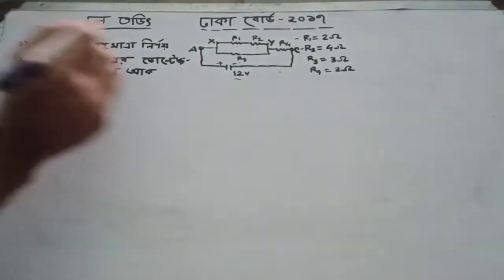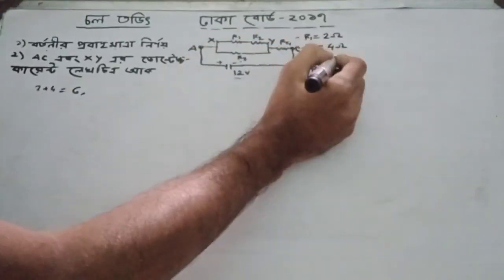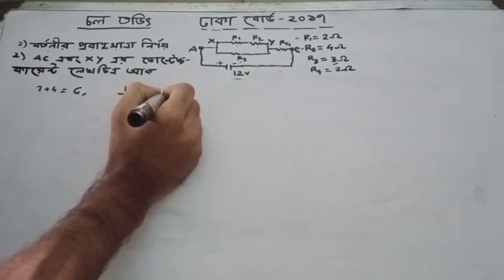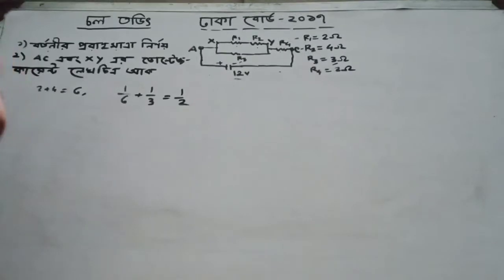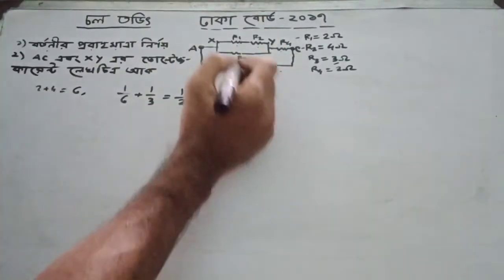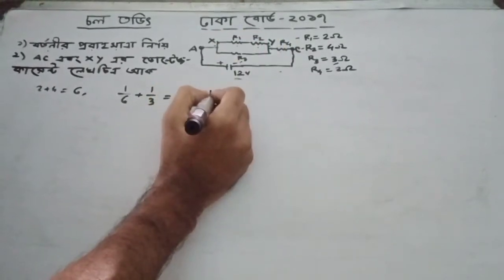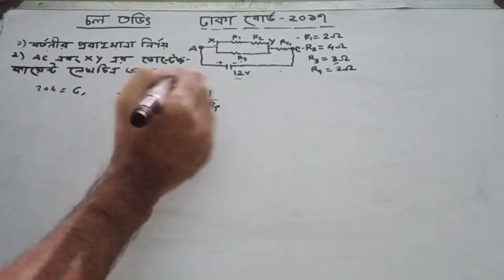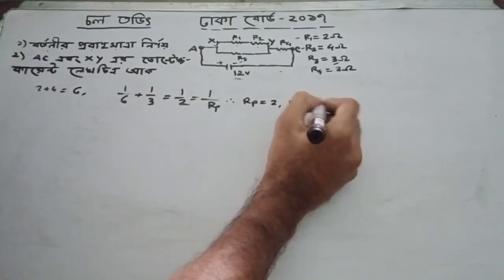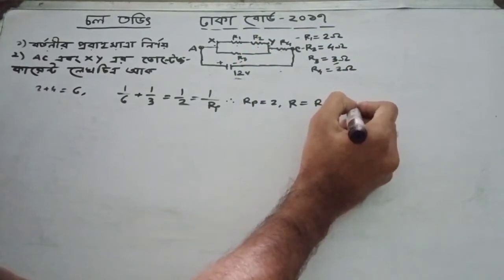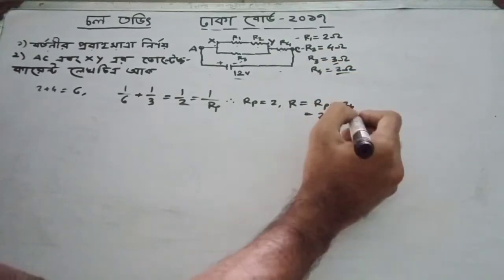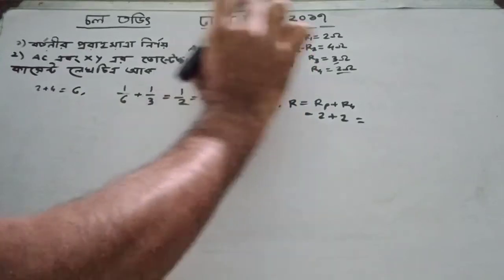Equal to six. Here this six R-three is in parallel. So the equivalent resistance — let's find out how much the total resistance is. rp equals 2, and rp total equals 2.